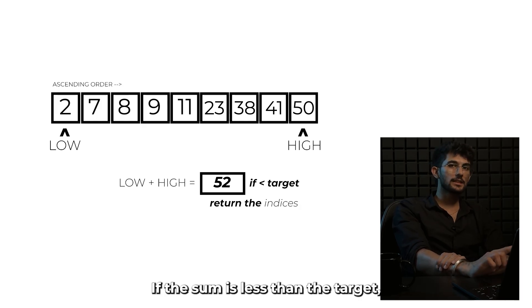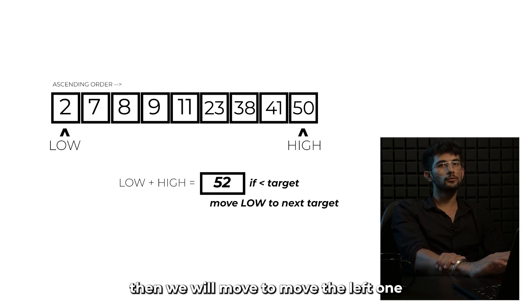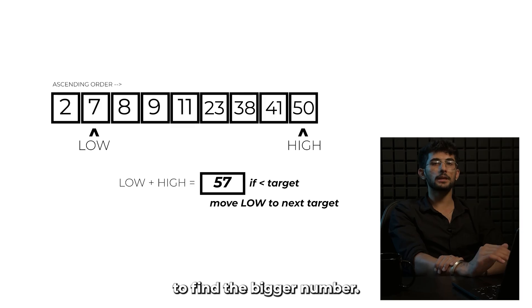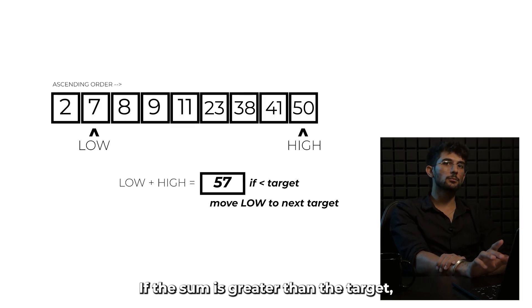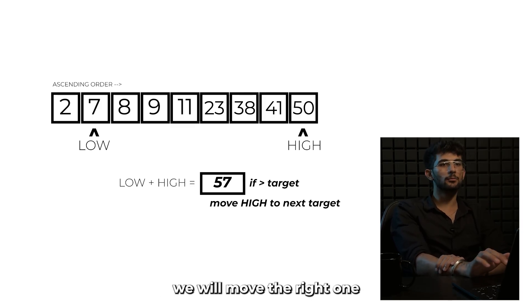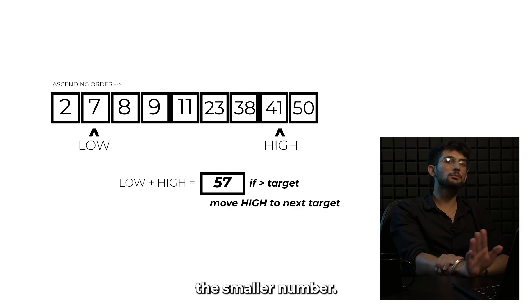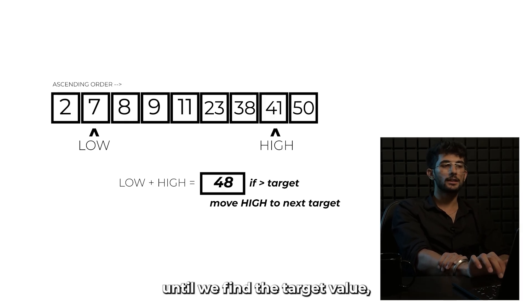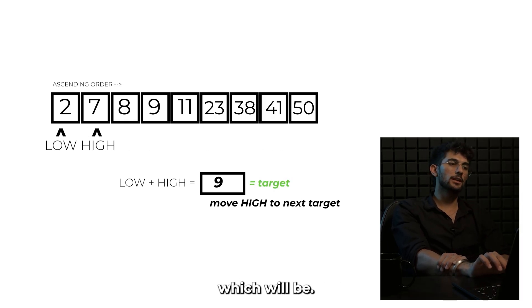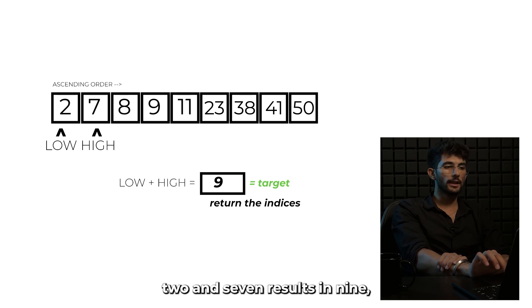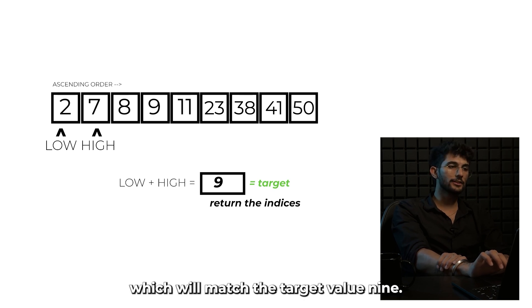If the sum is less than the target, then we'll move the left one to find the bigger number. If the sum is greater than the target, we'll move the right one to find the smaller number. We'll keep on doing that until we find the target value which will be in this case two and seven results in nine, which will match the target value nine.